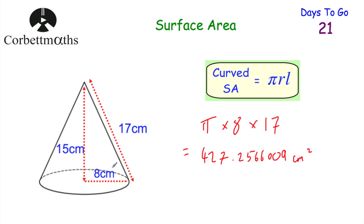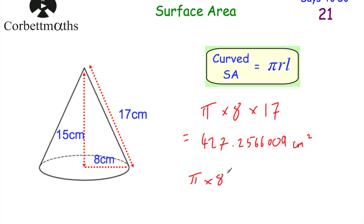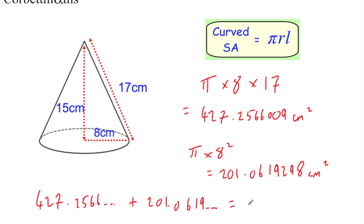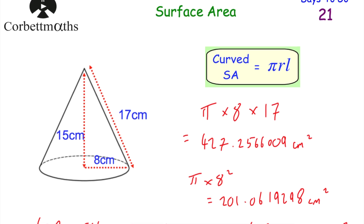For the base circle: πr² = π × 8² = 64π or 201.0619 centimetres squared. Adding them together for the total surface area: 427.2566 + 201.0619 = 200π or 628.318 centimetres squared. Remember, the curved surface area formula πrl (π times radius times slant height) is given to you, but if you need the total surface area, remember to include the base as well. That's the question done for you — now let's have a go yourself.